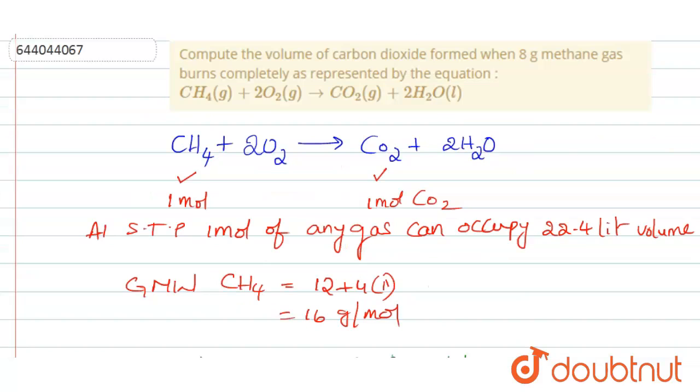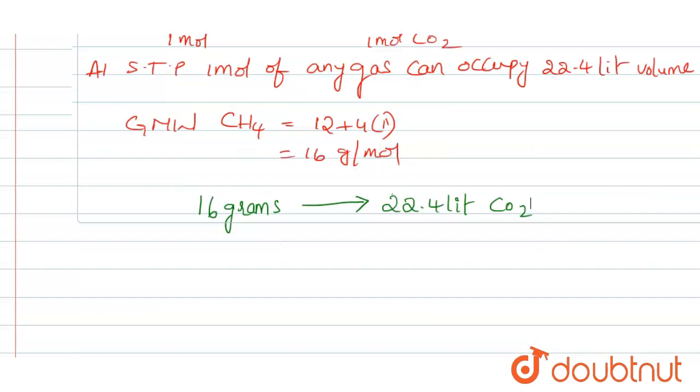So the question asked when 8 grams of methane was burnt. So when we burn only 8 grams of methane, what is the volume of carbon dioxide produced?